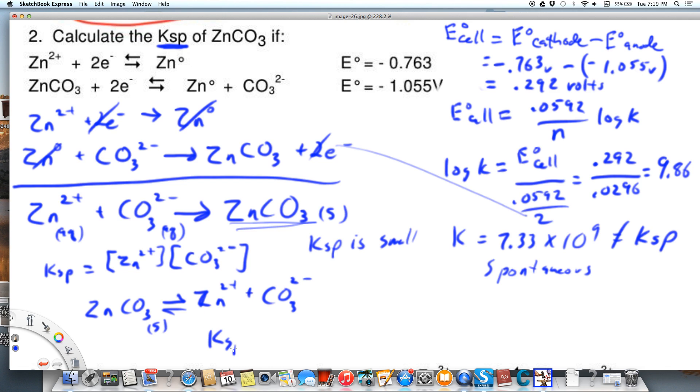So Ksp is equal to 1 over the K we just calculated here, which is equal to 1 over 7.33 times 10 to the ninth, which is equal to 1.37 times 10 to the negative tenth. That's Ksp and it's very small, meaning this reaction is not very spontaneous and Ksp is very small meaning that zinc carbonate is not very soluble.